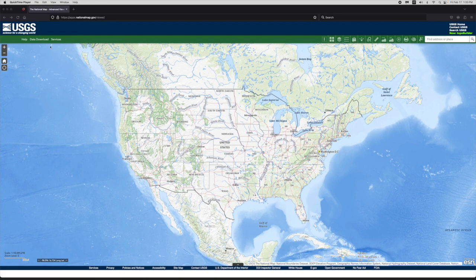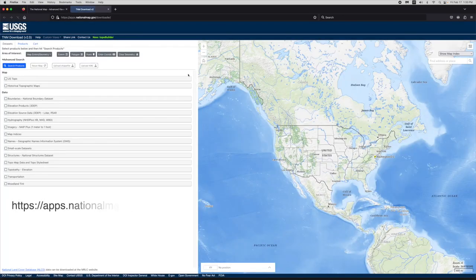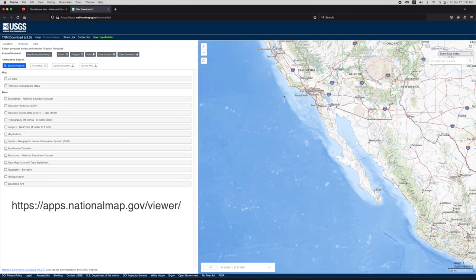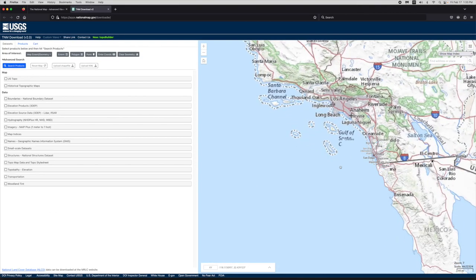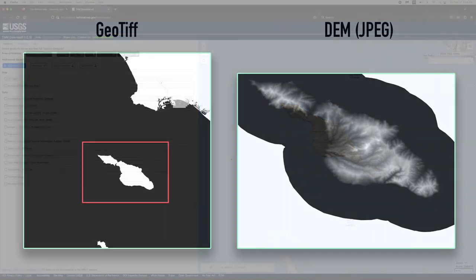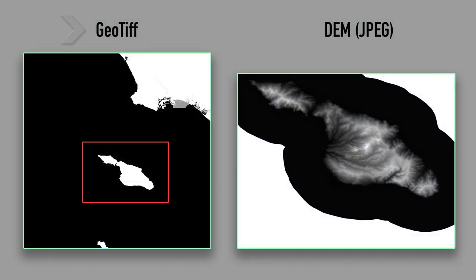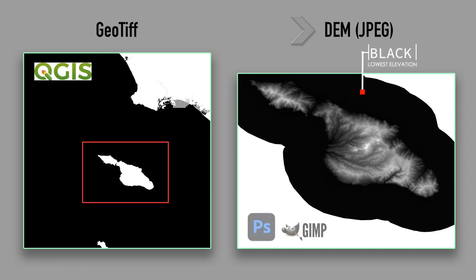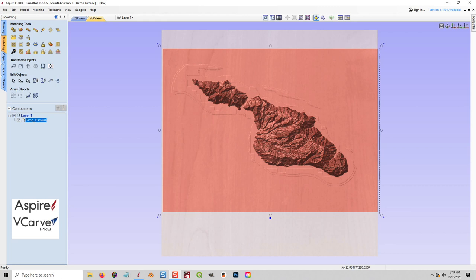We'll be gathering most of our information from the National Map, which is a source where we can get digital elevation models. We're going to be doing Catalina, a little island off the west coast. When we download information from the site, we'll be getting a GeoTIFF. A GeoTIFF isn't really friendly with image editors, so we'll bring that into QGIS and be able to see it as a DEM — a digital elevation model — which is a grayscale representation with blacks being the lowest point and whites being the highest points.